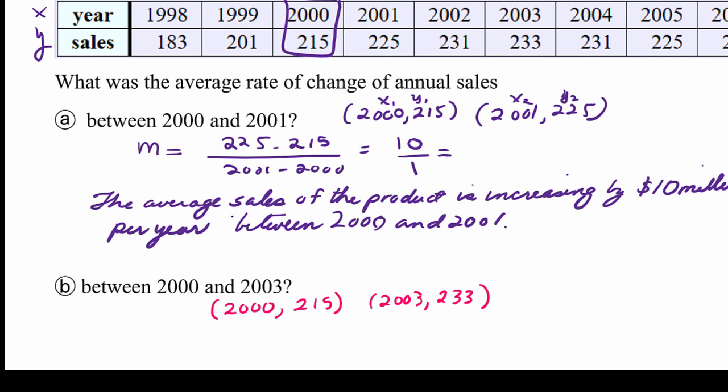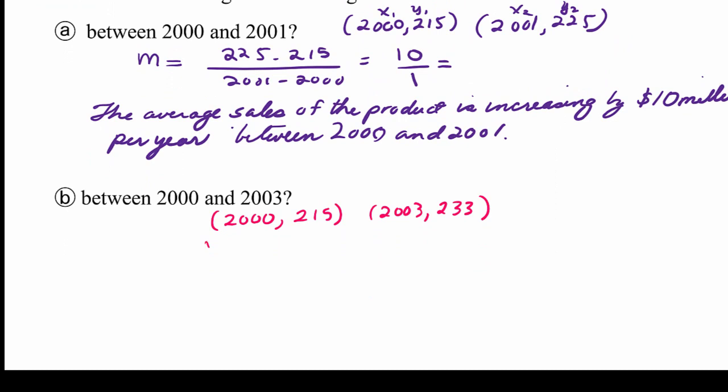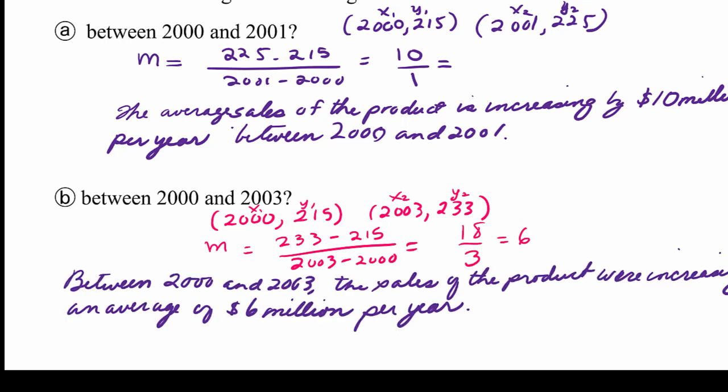And now let's find the average rate of change by finding the slope using the slope formula here. So m equals - and again, x1, y1, x2, y2 - 233 minus 215 over 2003 minus 2000. We get 18 over 3 or 6. So we know that between the years of 2000 and 2003, the sales of the products were increasing at an average rate of 6 million dollars per year.